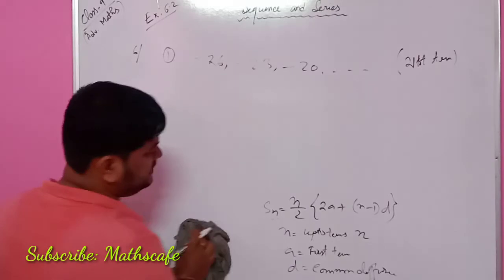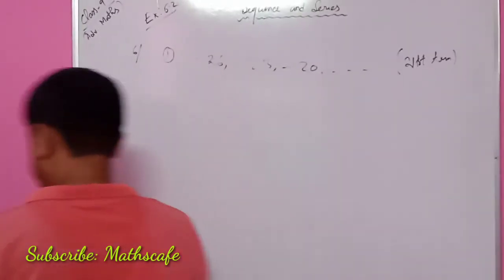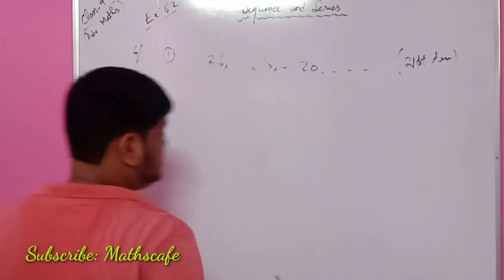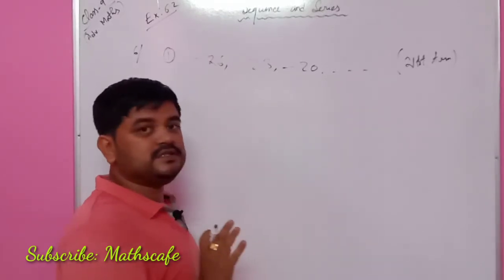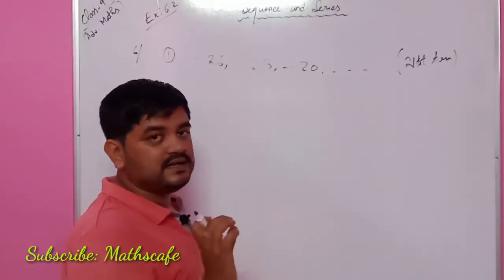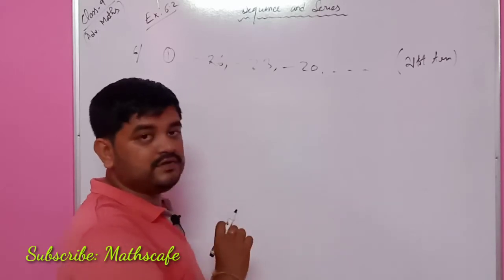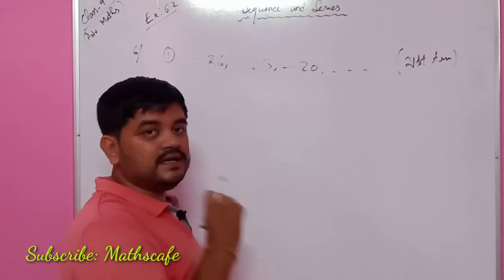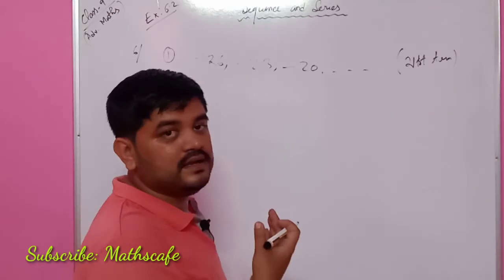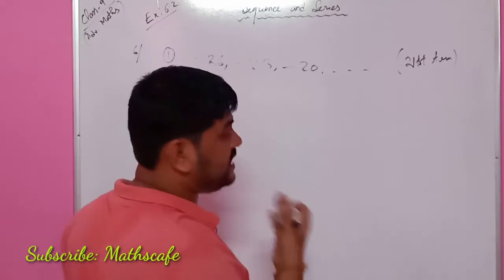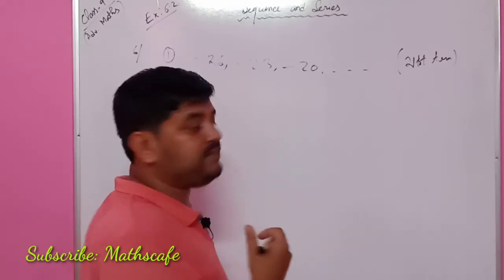Class 10 is the general mathematics. This is the arithmetic progression. This is the class 9 advanced mathematics. This is the class 10 general mathematics — only arithmetic progression.